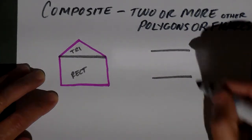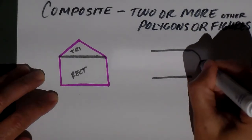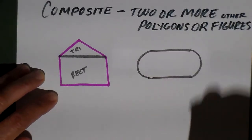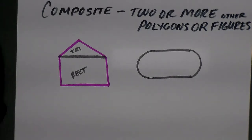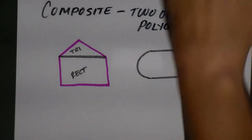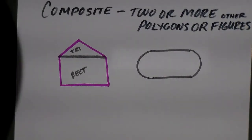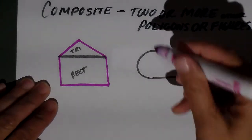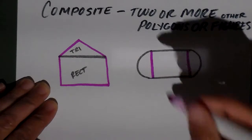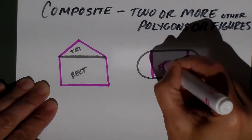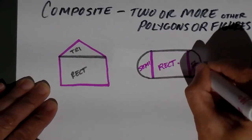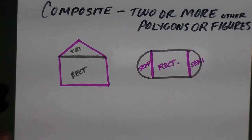One of the most common types of composite figures is a track around a football field. Around the football field you've got your straightaways and then you've got your curves — the curves are semicircles. There's no formula for the area of something shaped like this, so I put a line here and a line here. Now I've got a rectangle and two semicircles, and two semicircles come together to make one circle.